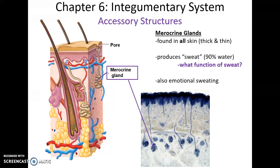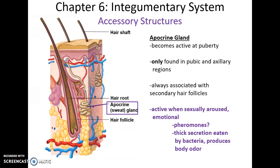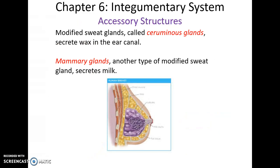Eccrine glands are the ordinary sweat glands that have ducts going up to the surface. They produce sweat, which is mostly water and helps us cool down as the water evaporates and heat is taken away from our body. You can also have emotional sweating. The apocrine gland is always associated with secondary hairs such as pubic hair or axillary hair in the armpit. These only become active after puberty and produce a thick secretion that is eaten by bacteria, which then produce the odor associated with unpleasant body odor. Ceruminous glands, found in the ear canal, help to produce the ear wax that protects the ear canal.